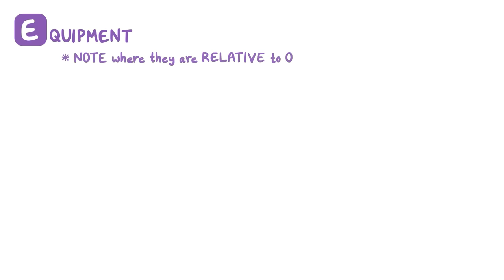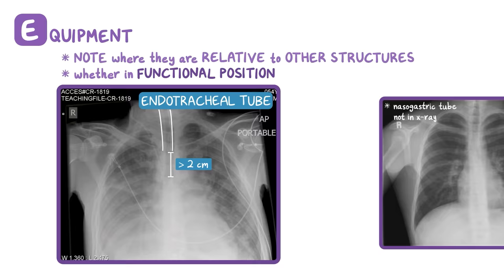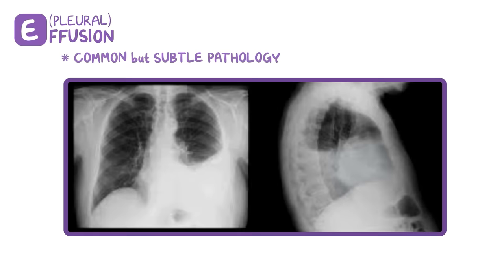E is for equipment, such as lines, tubes, and wires involved in life support. It's important to note exactly where they're located relative to other structures and whether they're in functional position. For example, an endotracheal tube should be in the middle of the trachea, and its tip should be more than 2 centimeters from the tracheal bifurcation, or a nasogastric tube should have its tip well within the stomach. E is also a reminder to check for a pleural effusion, which is a common but subtle form of pathology that you can see on an x-ray. Pleural effusions are fluid that collects at the costophrenic angle and causes blunting of the normally sharp costophrenic angle.